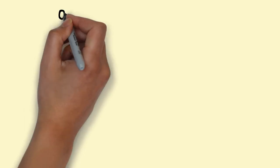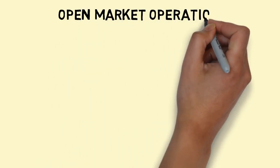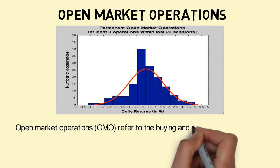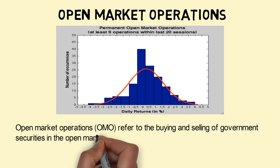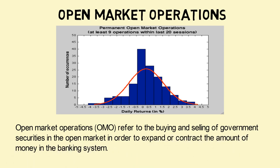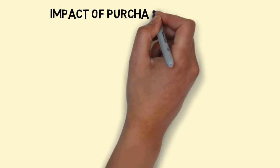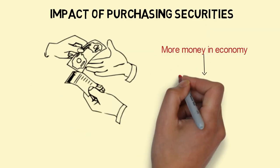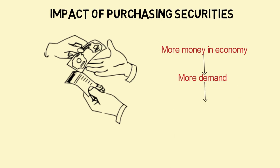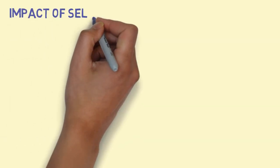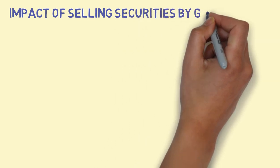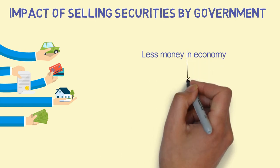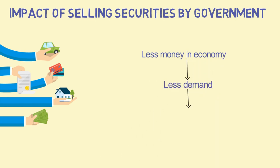Open Market Operations (OMO) refers to the buying and selling of government securities in the open market in order to expand or contract the amount of money in the banking system. When RBI purchases securities, more money enters the economy, leading to more demand and a higher growth rate. When RBI sells government securities, it leads to less money in the economy, less demand for goods and services, and lower prices.